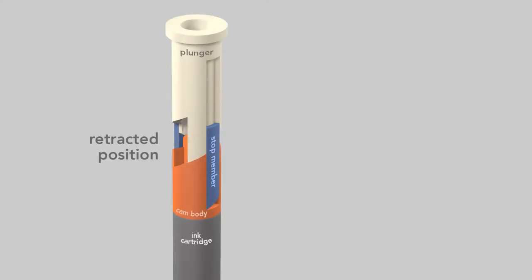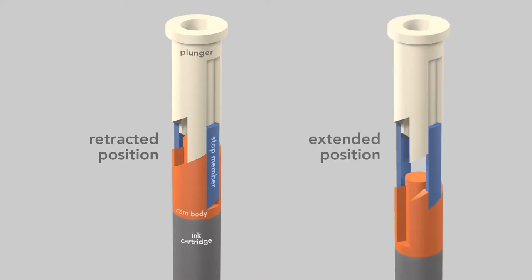The pen can be in either of two positions. The retracted, non-writing position where the tip of the cartridge is inside the barrel, or in the extended, writing position where the cartridge's tip projects from the barrel. To see how the plunger, cam body, and stop members interact, I've broken the cam movements into 8 steps.